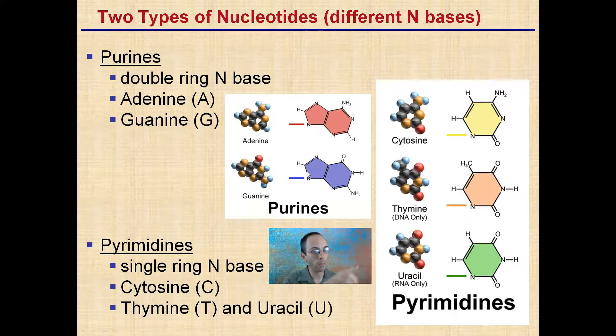Now, on this side, here, over here, there are pyrimidines. And these are a single ring nitrogen base. And cytosine, which will be present in both DNA and RNA. Thymine will only be present in DNA. And uracil will only be present in RNA. So when we look at our nucleotides, that can help us identify what particular nucleic acid we are looking at.